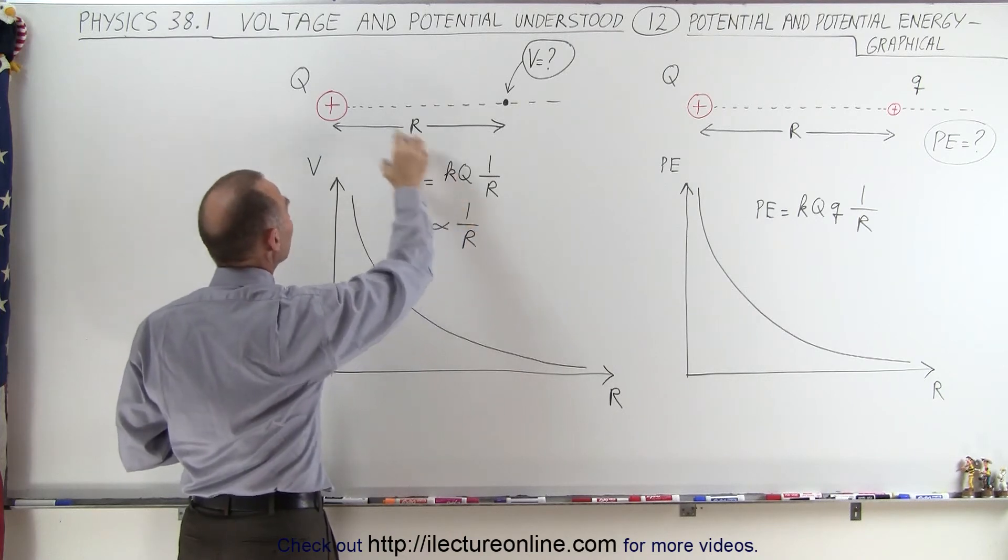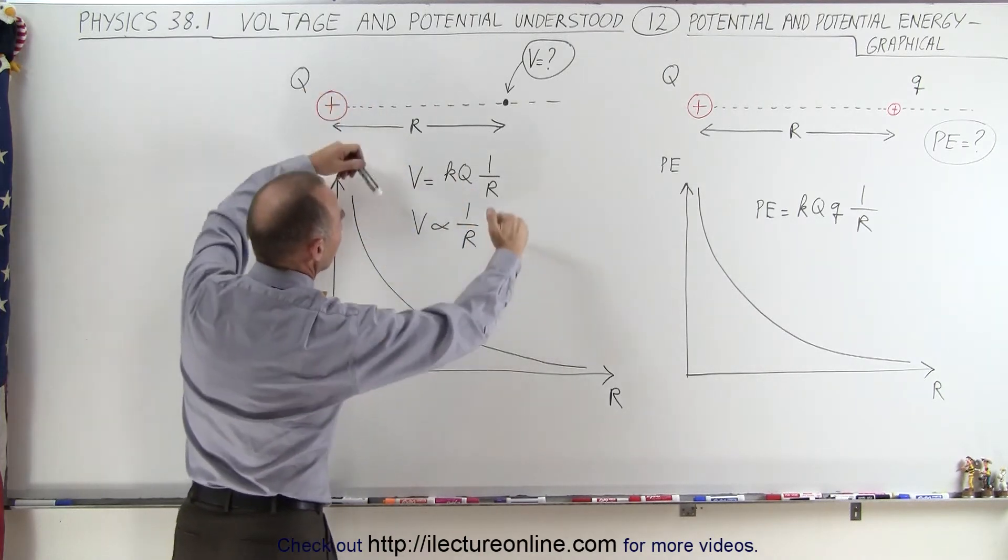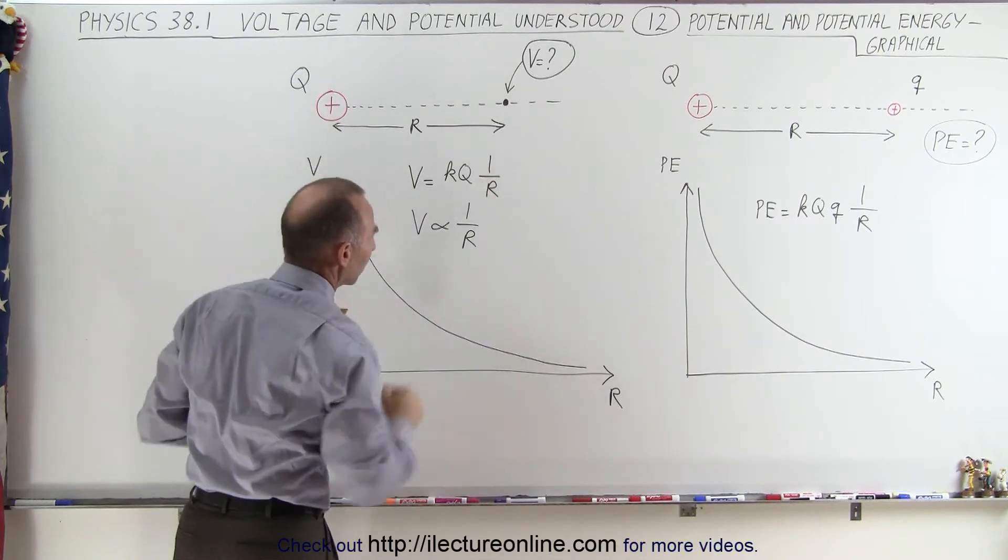K is a constant, Q is the charge. The bigger the charge, the higher the graph. The smaller the charge, the lower the graph.